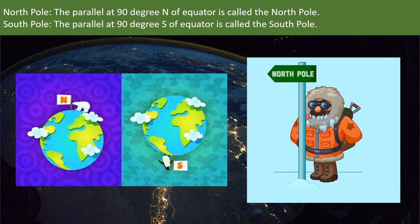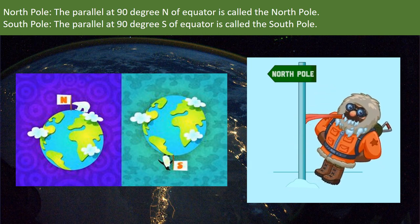The parallel at 90 degree north of equator is called the North Pole. The parallel at 90 degree south of equator is called the South Pole.